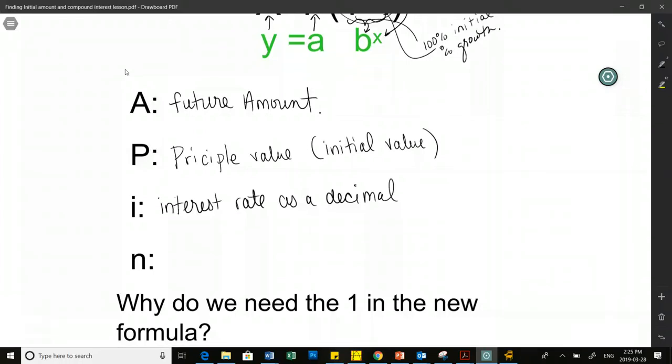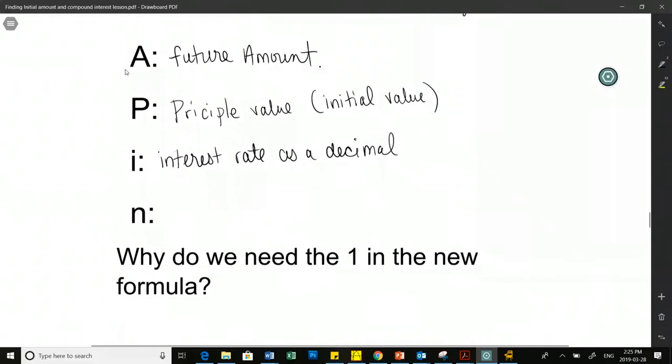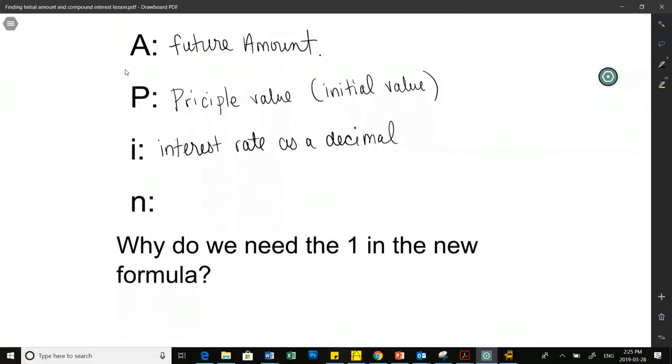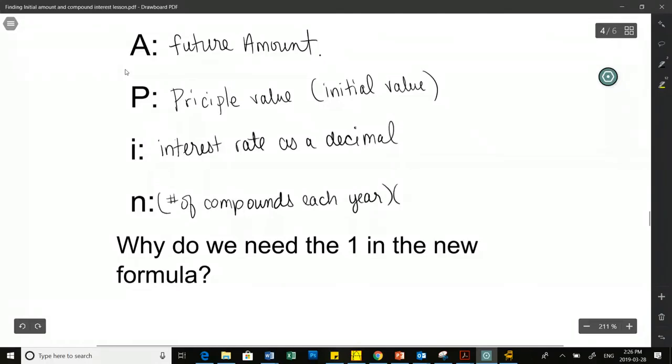And our n value is slightly different than our x value. Our x value, we used to do total time over the growth period or decay period. For n, in this case, we want to know within our certain number of years how often or how many times our interest gets compounded. I'm going to explain the word compounded to you in a second. But basically, just for now, this is going to be number of compounds per year times our total number of years.